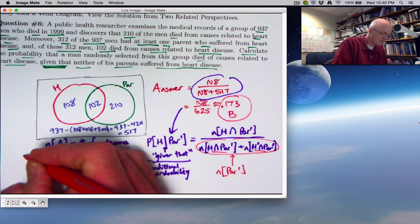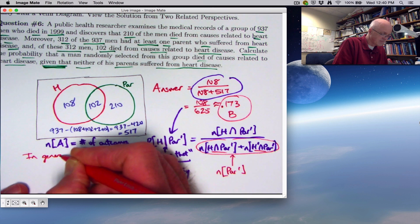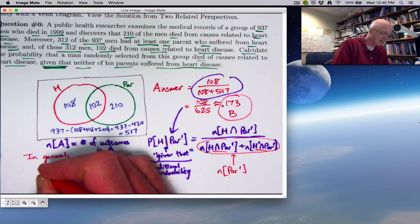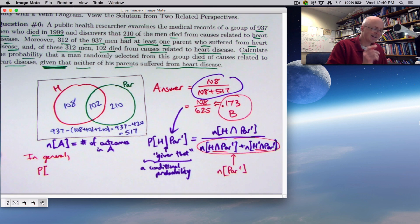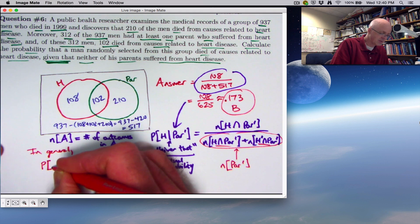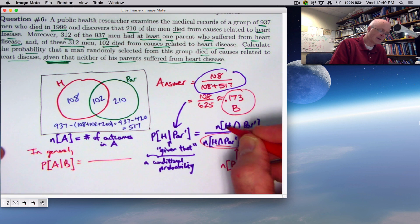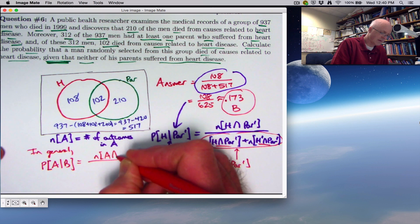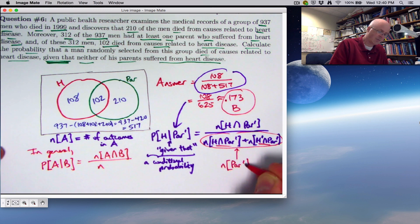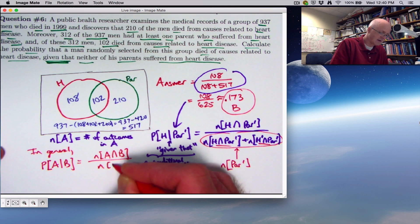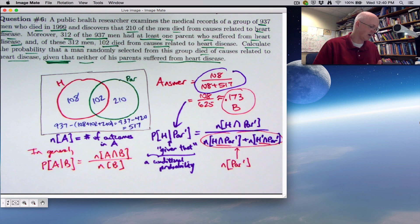And what we can say is, in general, at least if we're able to enumerate the number of elements in these different sets, and if we assume all outcomes are equally likely, which is not always the case, we can write the conditional probability of A given B as the ratio of the number of elements in the intersection divided by the number of elements in B. PAR prime was the given thing. I could write it this way, with a caveat that we're assuming all outcomes are equally likely and we can actually find these numbers. And also, as long as B is not empty.